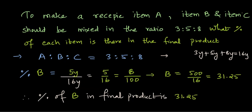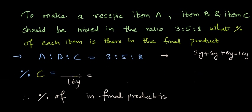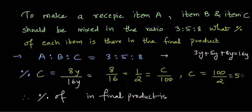Now what about C? We can simply write percentage of C as 8y divided by 16y, and that gives me 8 by 16 which is 1 by 2, and equating it to some C by 100, I can find C after cross multiplication. C is equal to 100 divided by 2 which is 50. So percentage of product item C in the final product is 50%.